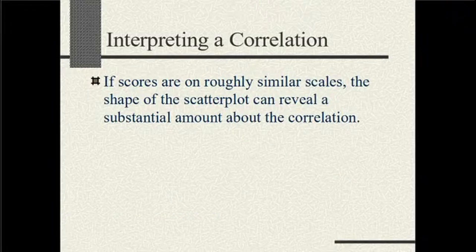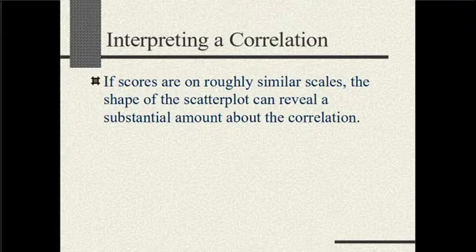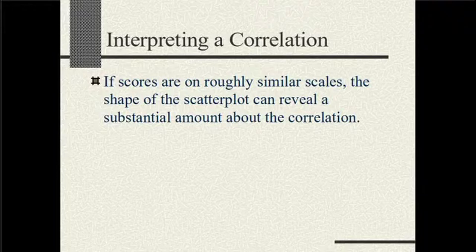What is correlation? It is a quantitative measure of the relationship between two variables. It has to be interpreted properly because sometimes it is perceived as causation, which is not true. Correlation can be computed using the correlation formula, but you cannot interpret it without a proper scatter plot. So the scatter plot is very important to interpret the correlation value.